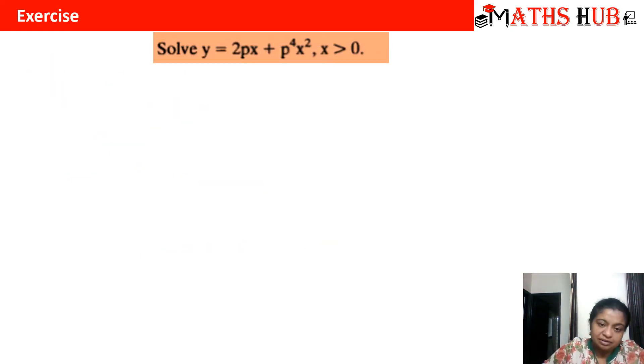So now let us do one more question and check up this method, so that becomes very clear in your mind. y equals 2px plus p raised to power 4 times x square. Let us take the derivative.